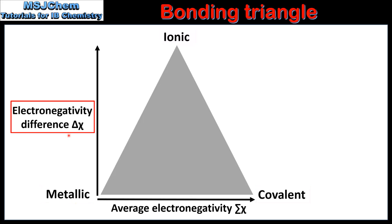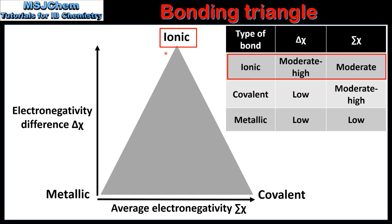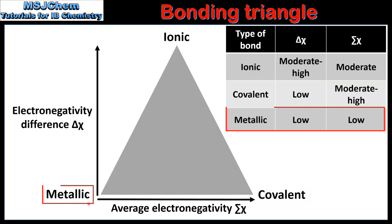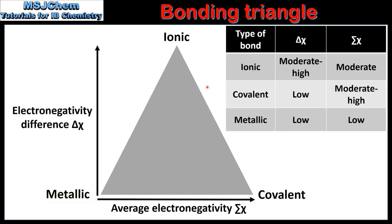On the Y axis we have Difference in Electronegativity and on the X axis we have Average Electronegativity. For Ionic Bonding we have a Moderate to High Electronegativity Difference and a Moderate Value for the Average Electronegativity. For Covalent Bonding we have a Low Difference in Electronegativity and a Moderate to High Value for the Average Electronegativity. For Metallic Bonding we have a Low Difference in Electronegativity and a Low Average Electronegativity value. These two factors determine the type of bonding that occurs in a substance, and also the Properties of the Substance.